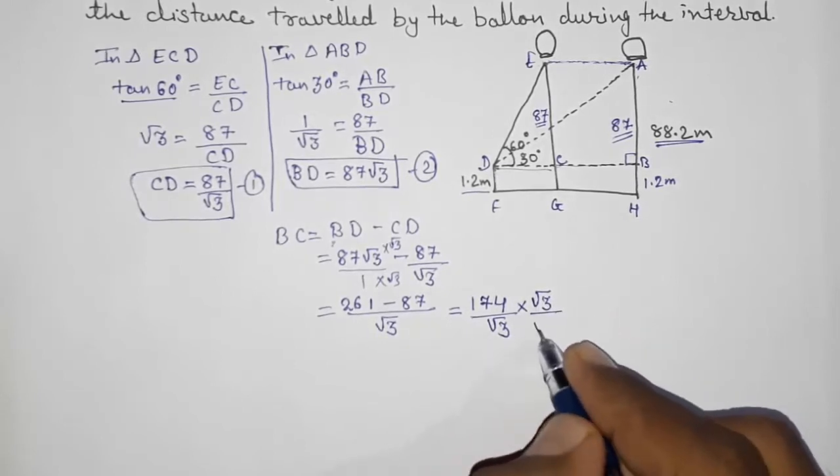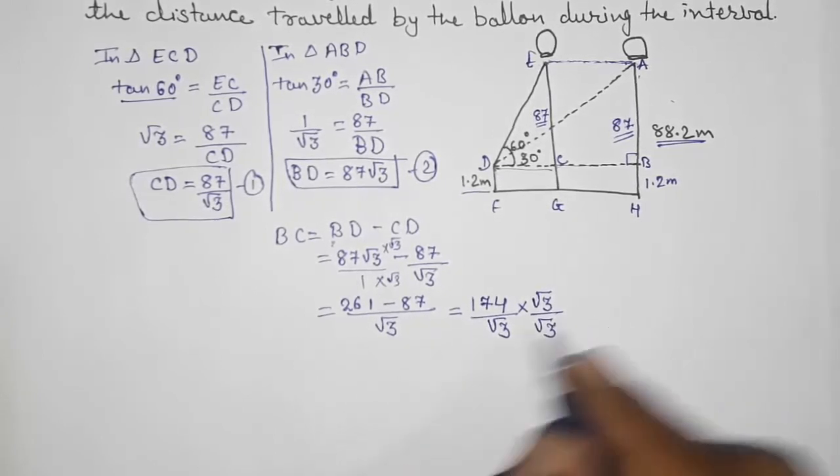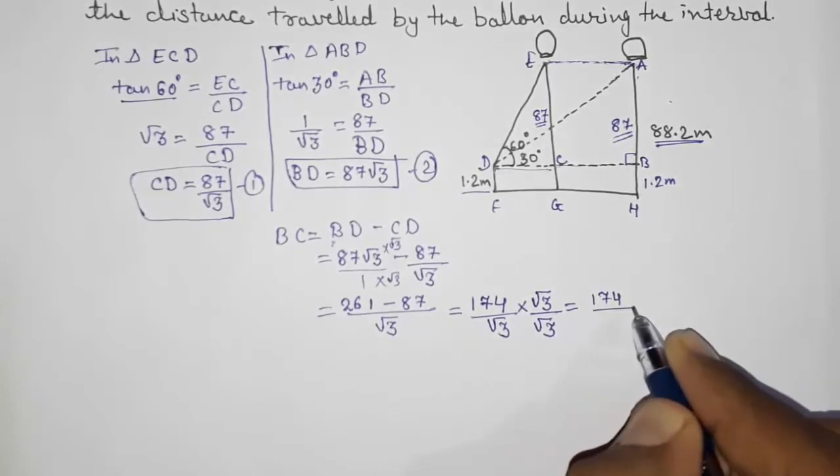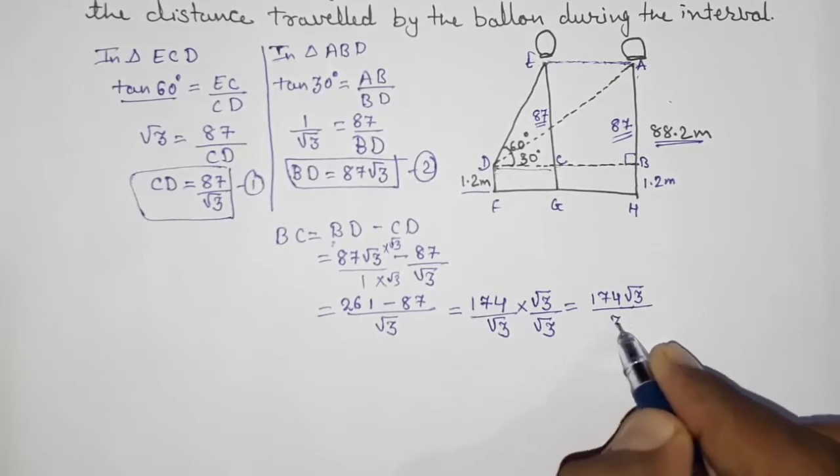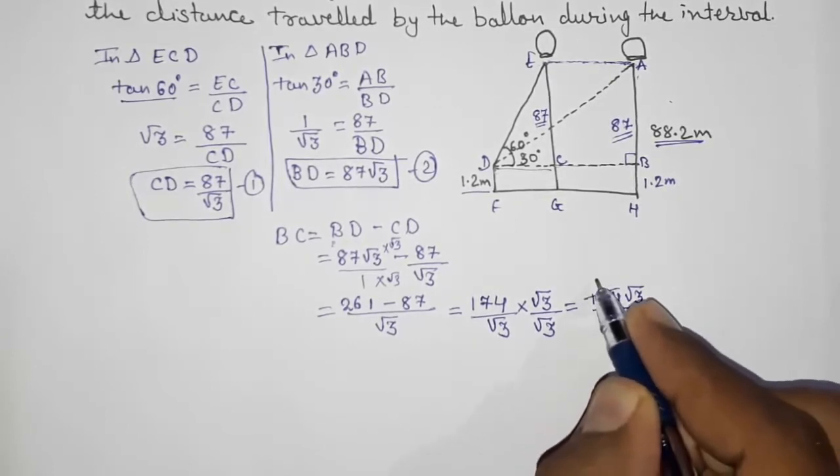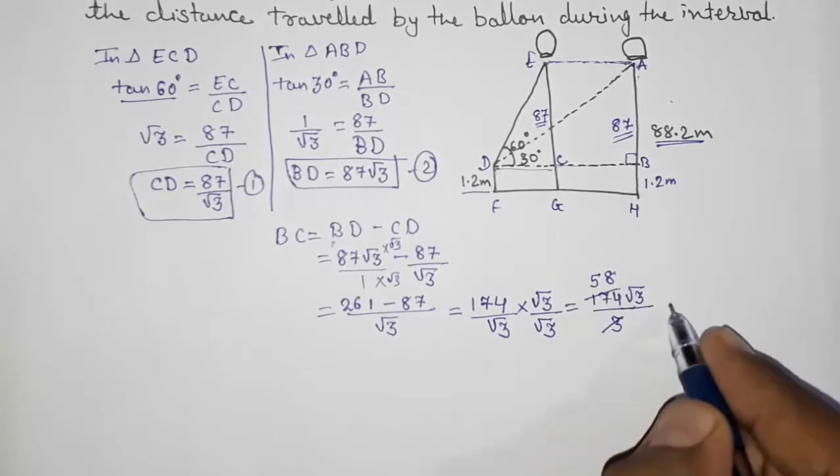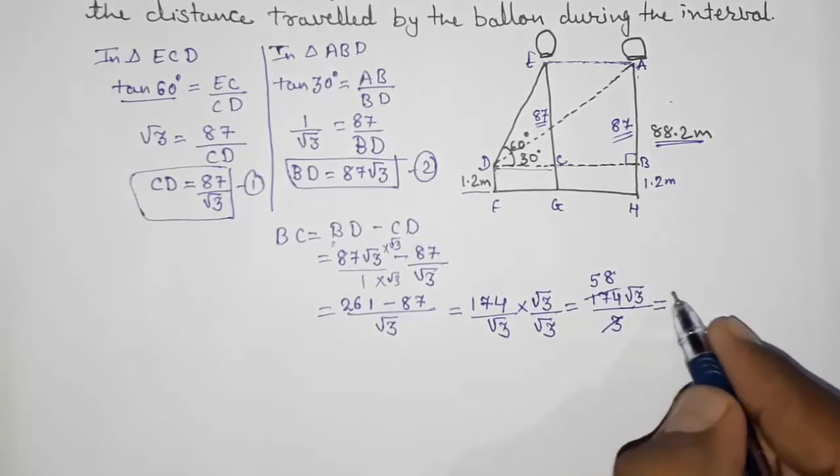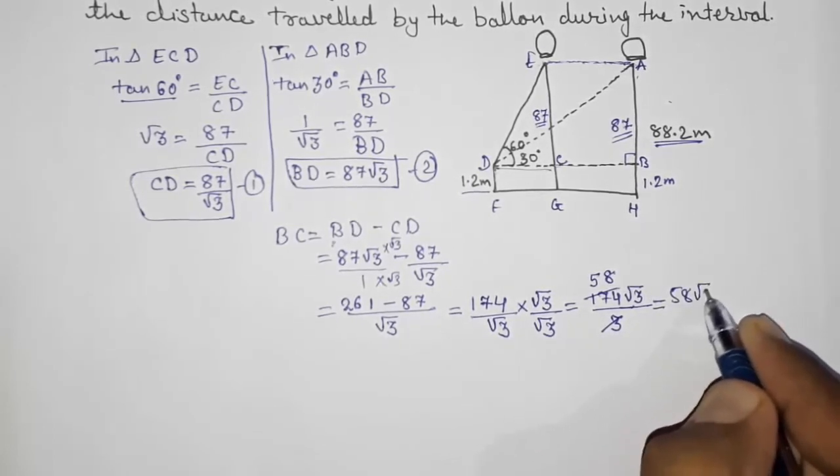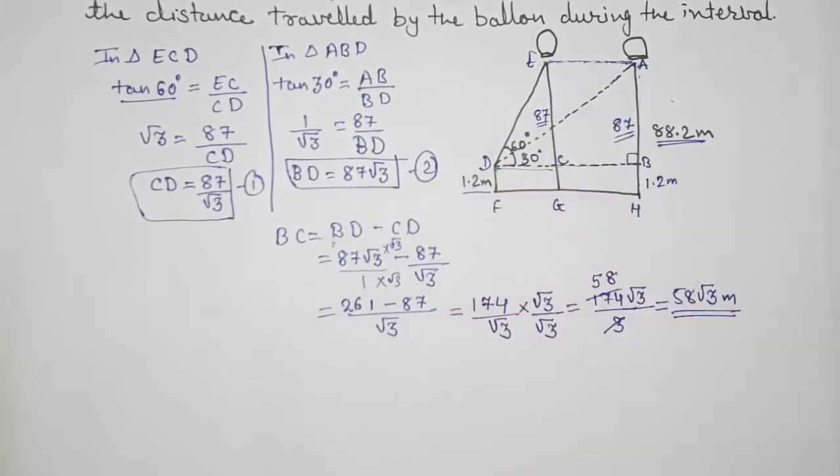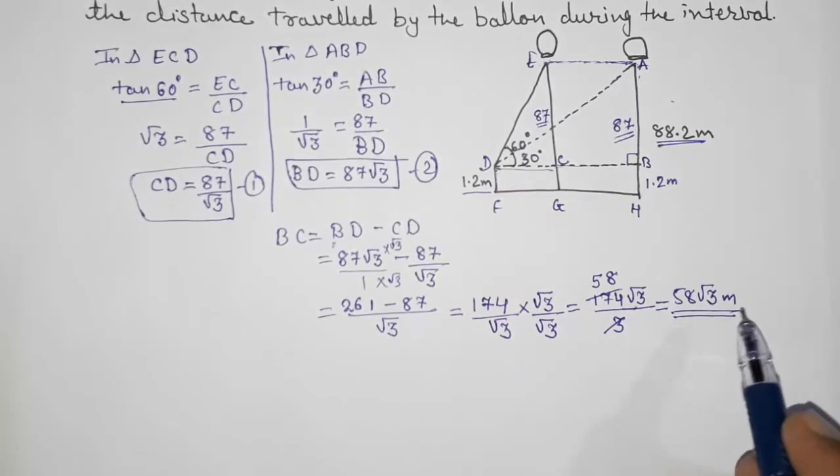Rationalize by multiplying root 3 upon root 3. So what will happen? 174 by... so 174 into root 3 by 3. 3 threes, 3 ones are 3, 5s are 15 and 24, 3 eights are 24, so it's 58 into root 3 meters. So the distance traveled by the balloon will be 58 root 3 meters.